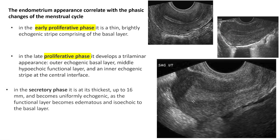In the secretory phase, the endometrium becomes thick, up to 16 mm, and becomes uniformly echogenic, as the functional layer becomes edematous and is isoechoic to the basal layer.